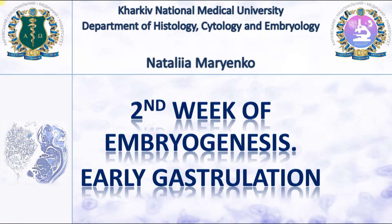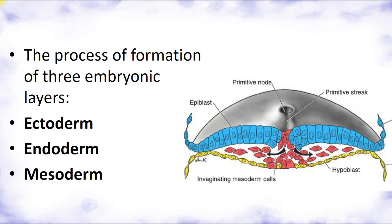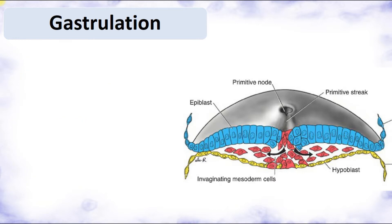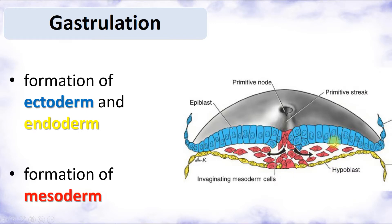We are going into the second week of human embryogenesis. Now let's talk about early gastrulation. The process of formation of three embryonic layers — ectoderm, endoderm, and mesoderm — is called gastrulation. It is a very important process which includes formation of ectoderm and endoderm, the outer and inner embryonic layers, as you can see here, and also formation of mesoderm.